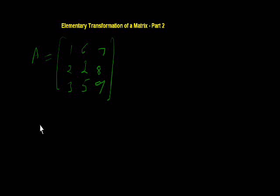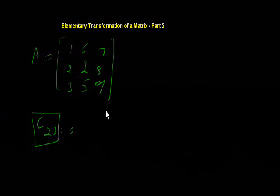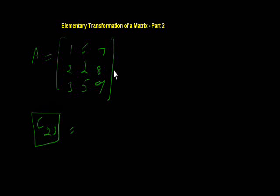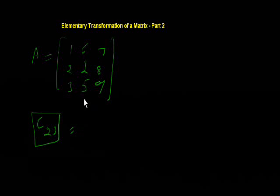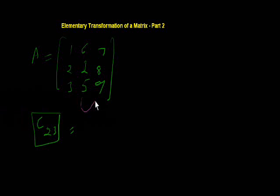I am interchanging the columns — C2 and C3. C2↔C3 means I will convert the second column into the third column, and the third column into the second column.